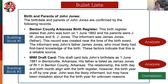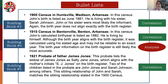For the birth and parents of John Jones, we have an introduction and then go through each point with some analysis. In the second bullet — which is also a building block — we have some analysis and then correlation. The third building block is a bullet point with more correlation. Building block four also has correlation and analysis. Building block five wraps it all up with correlation of the probate of the father, which helps prove that James Jones is the father of John Jones and that Sally Jones is also his mother.